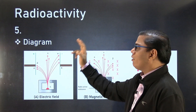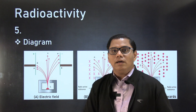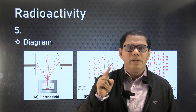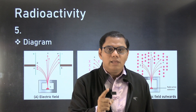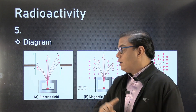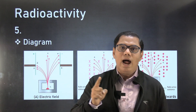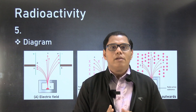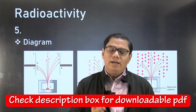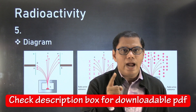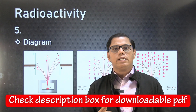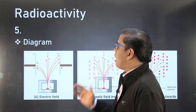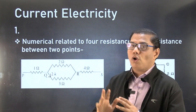Prediction number five involves diagrams. Either an incomplete diagram will be given and you need to complete it, or a diagram will be followed by a question you must answer. The direction of the alpha particle can be found using Fleming's left-hand rule, and the direction of the beta particle is just opposite to the direction of the alpha particle. These were my predictions for radioactivity.